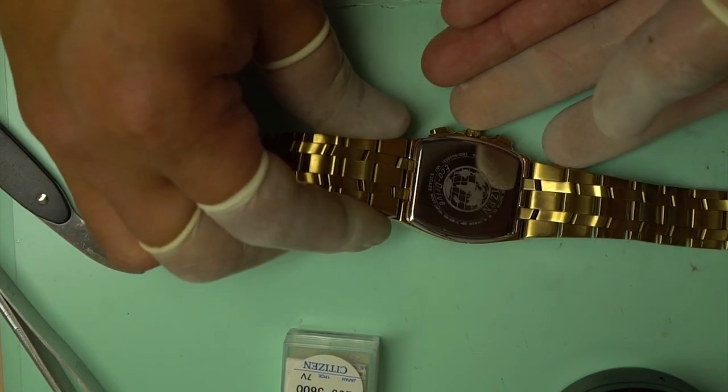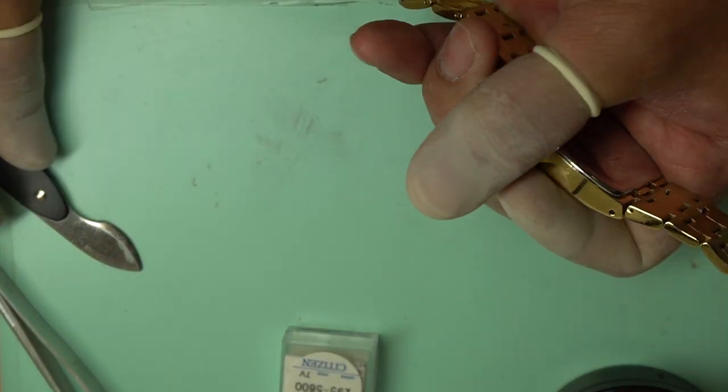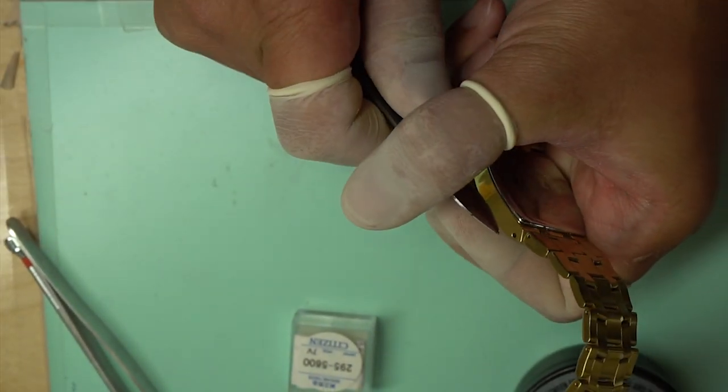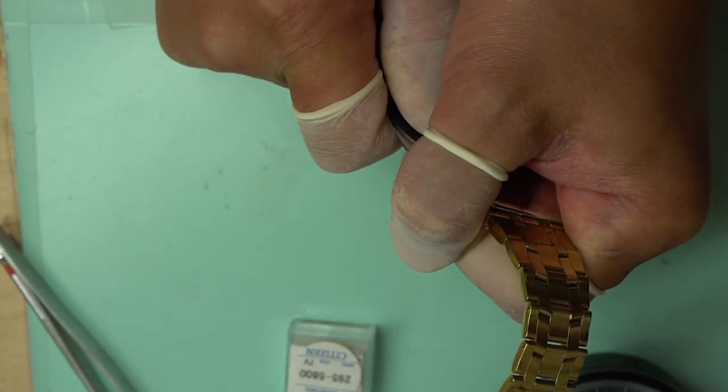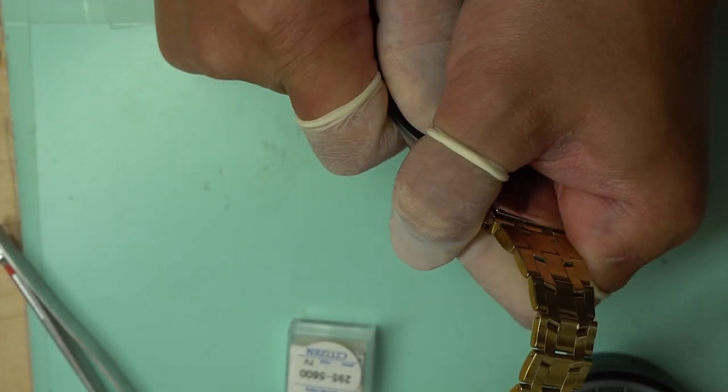Here we are replacing a capacitor in a Citizen Eco Drive solar-powered watch. Our technician is going to use a watchmaker's knife to pop open the case back on this watch.